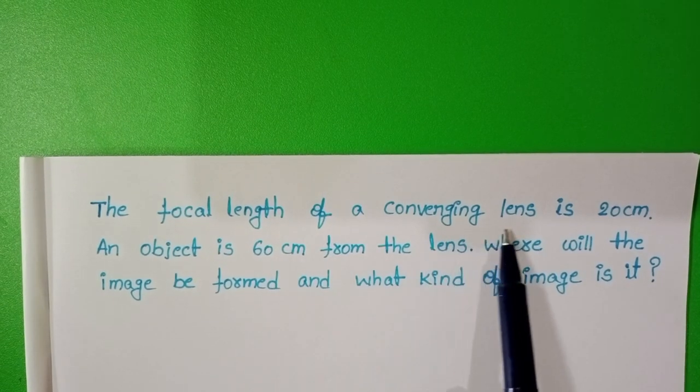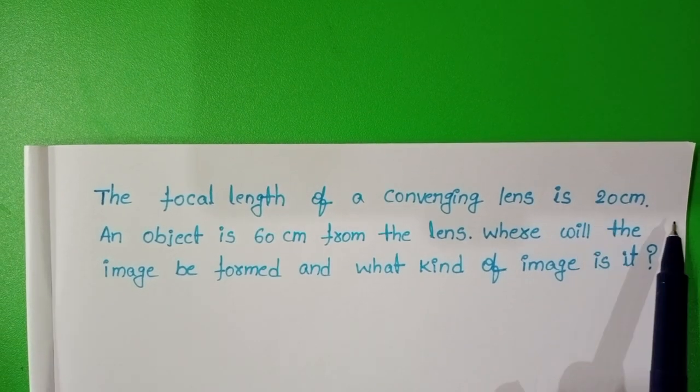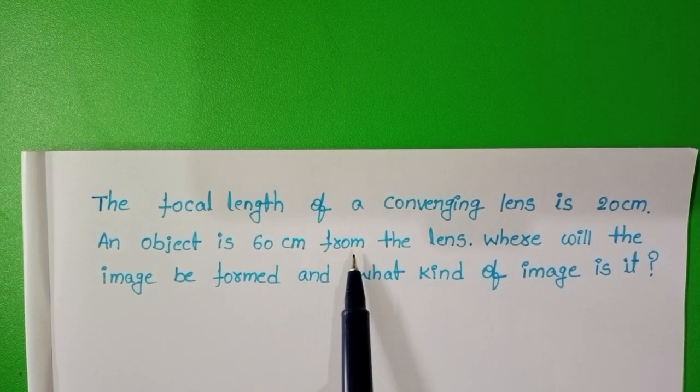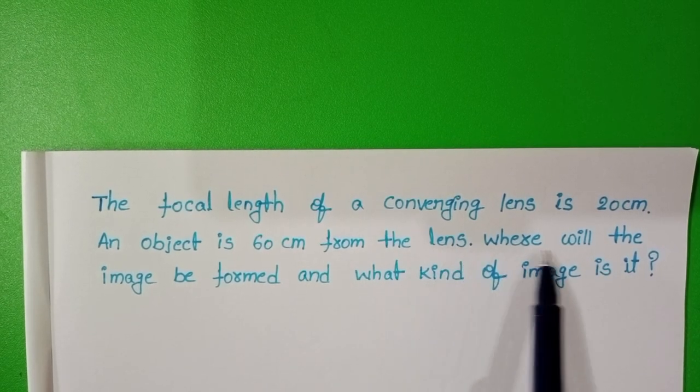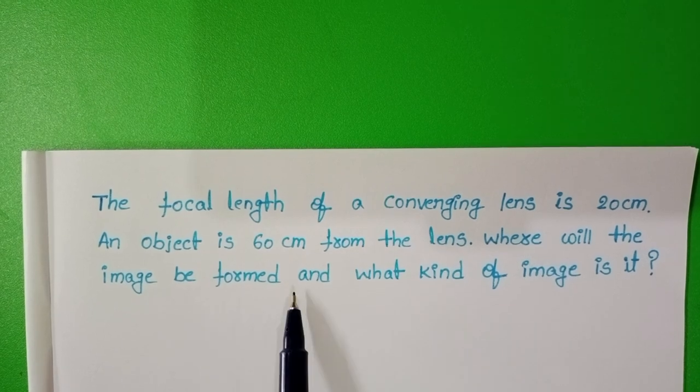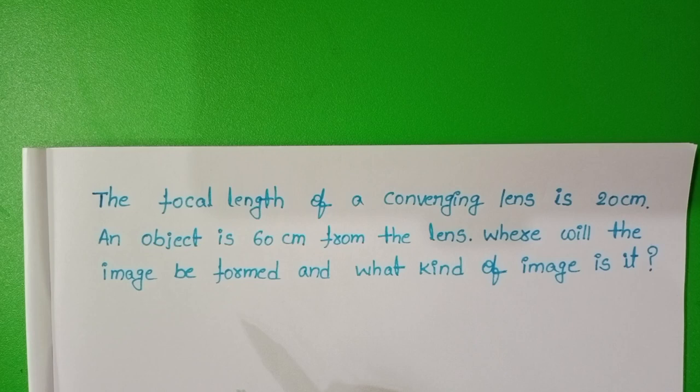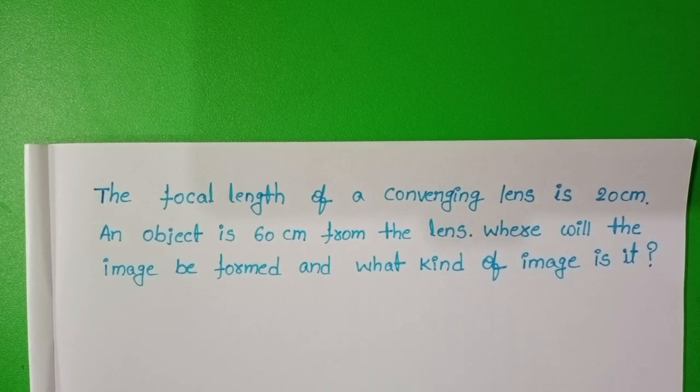The focal length of a converging lens is 20 cm. An object is 60 cm from the lens. Where will the image be formed and what kind of image is it?